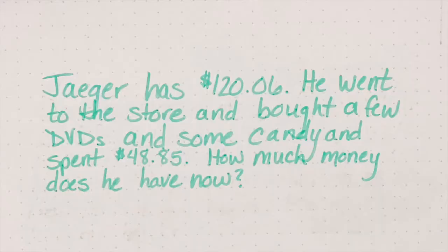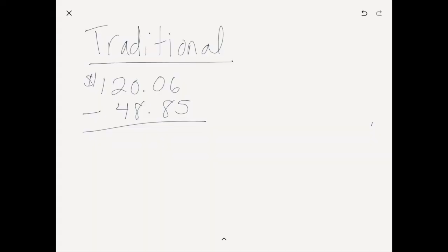We're going to use one story problem to look at six different ways kids could solve money word problems with subtraction. The problem is: Jager has $120.06. He went to the store and bought a few DVDs and some candy and spent $48.85. How much money does he have now? Let's take a look at how to solve that one problem with these six strategies — and remember, don't teach your students all six.